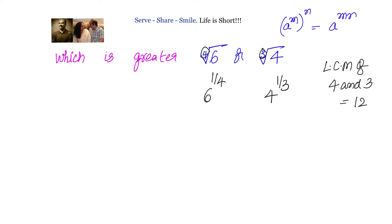So we will raise both these irrational numbers to the power of twelve, the LCM of four and three, so that we can cancel out the fractions and get integers. Then we can calculate what is the value.